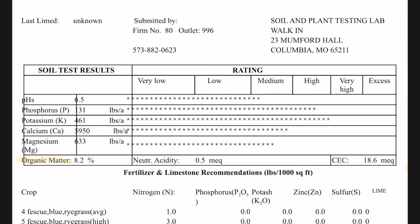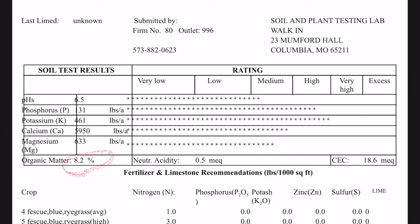Organic matter is another important item of soil health, as it helps with water and nutrient retention. Simply put, organic matter is all the stuff in the soil, such as plant residue, microbes, and decomposing matter. The 8.2% is excellent. If this was low — less than 3% — then an easy way to correct this would be to not bag your lawn clippings.